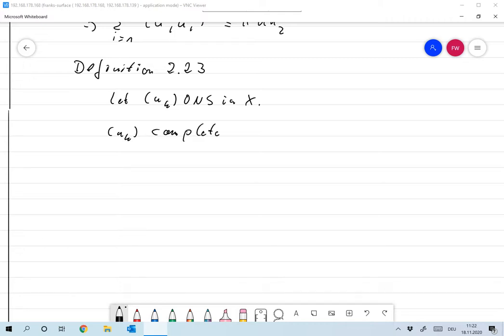Let UK be an orthonormal system in X and we say that UK is complete if X is the span of vectors UK and its closure. So by span of the UK I mean all finite linear combinations of any elements of UK.